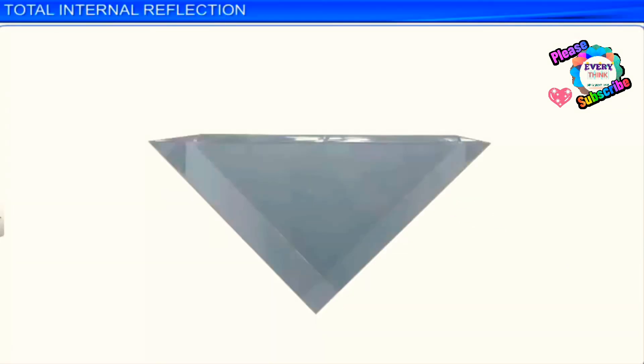In many optical instruments, prisms are used to deflect and redirect the light without loss of intensity. Right angled prisms are most commonly used for such applications.